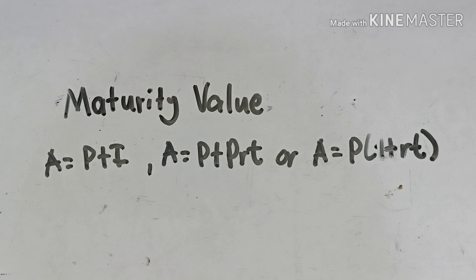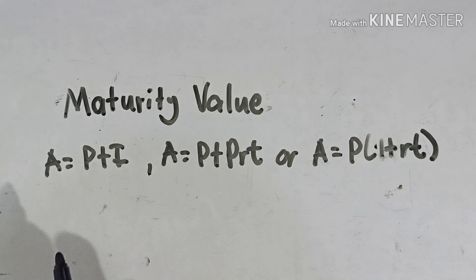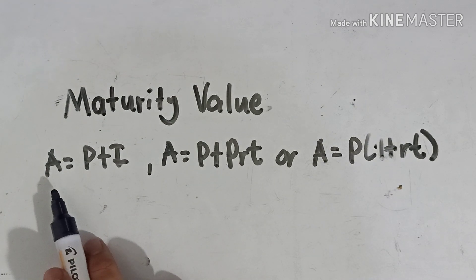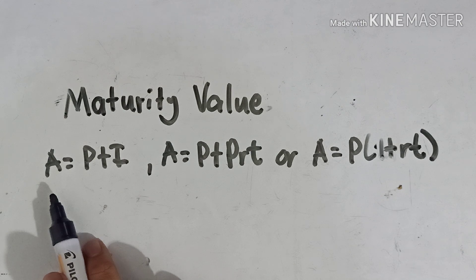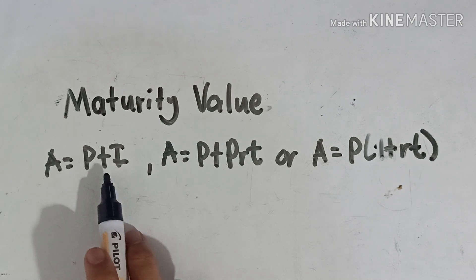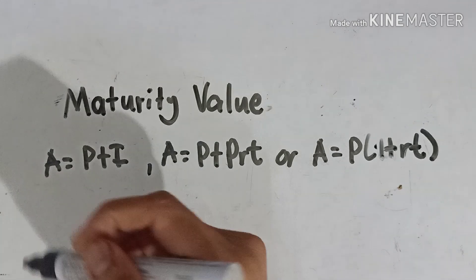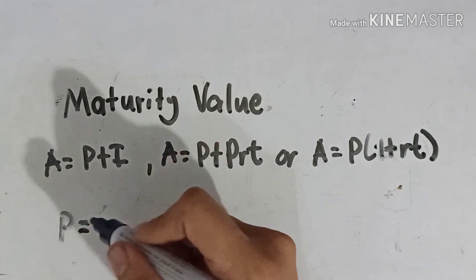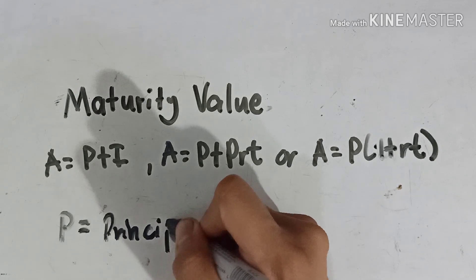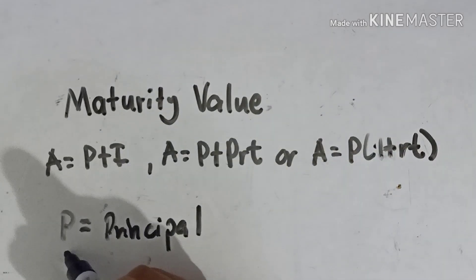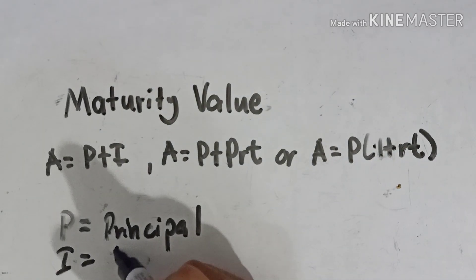Today we're going to learn the maturity value of simple interest. To find the maturity value, there are three formulas that we can use. The first is A, which stands for the accumulated value — or in similar meaning, the maturity value — and it is equals to P plus I, where P stands for the principal and I stands for the interest.